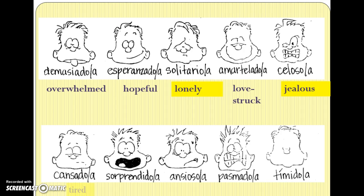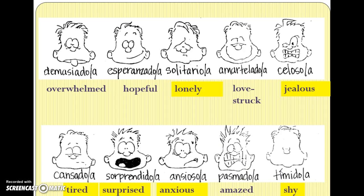The next row: cansado means tired — you need to know that one, so highlight or underline it. Sorprendido is a cognate meaning surprised — you need to know that one too. Ansioso is a cognate meaning anxious — note there's an X in the English version but not in Spanish. Pasmado means amazed — not required for the quiz. And tímido means shy or timid — remember there's an accent over the I. You also need to know bueno/buena/buenos/buenas for good, and malo/mala/malos/malas for bad.